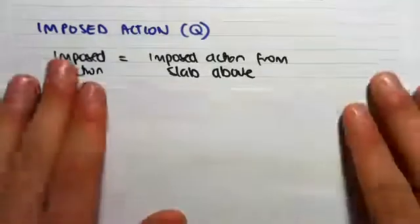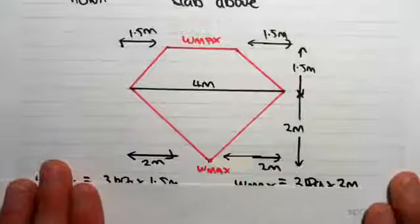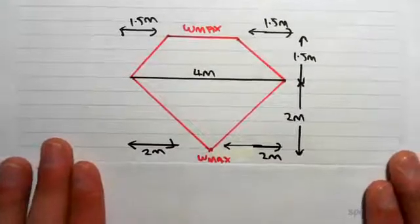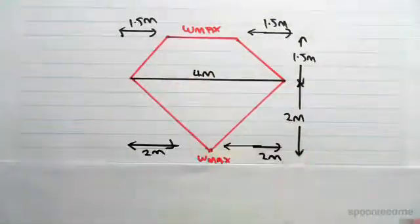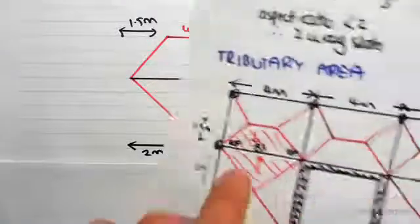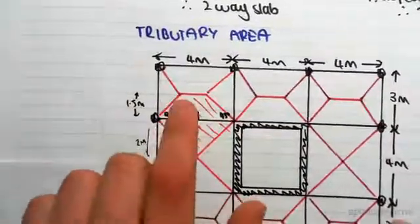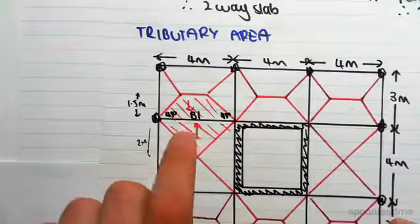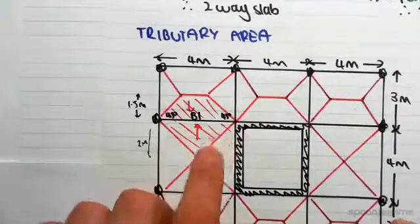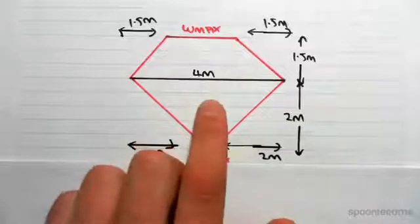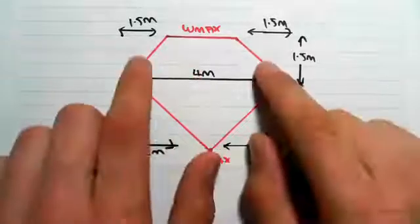So imposed action from the slab above. Now the distribution is the exact same as the permanent action case. The amount of live load going from this slab is that amount, the trapezium, and from this slab it's this triangle. So I've just taken it out there. We discussed these dimensions in the previous video.